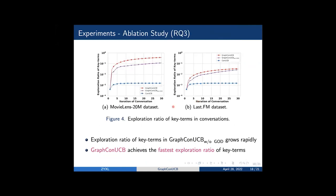To answer the last research question, we conduct an ablation study of our algorithm. We observe that the exploration ratio of key terms of the variant graph-convUCB without G-O-D module improves the SOTA baseline convUCB significantly. However, we further observe that our algorithm achieves the fastest exploration ratio of key terms on both MovieLens20M and LastFM datasets, which indicates that each module in our system has positive effects.